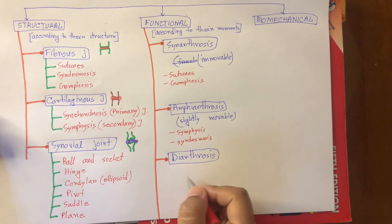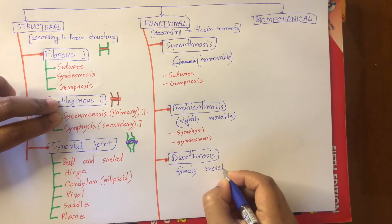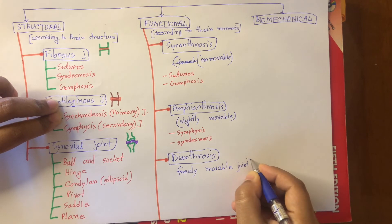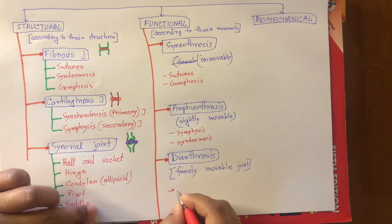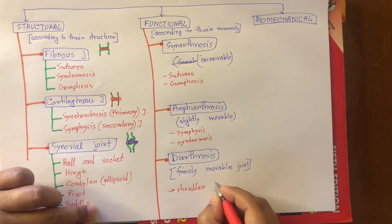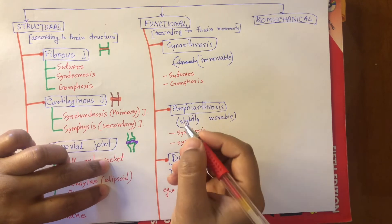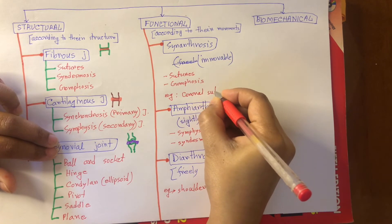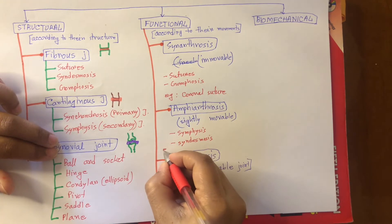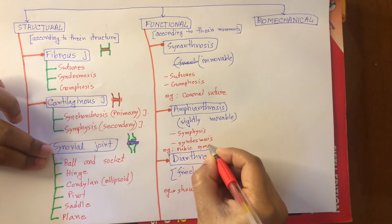Now let's see diarthrosis. This is the freely movable joint. All diarthrosis joints are synovial joints. They can move freely. For example, the shoulder joint is an example of diarthrosis. An example of synarthrosis is the coronal suture, and an example of amphiarthrosis is the pubic symphysis.